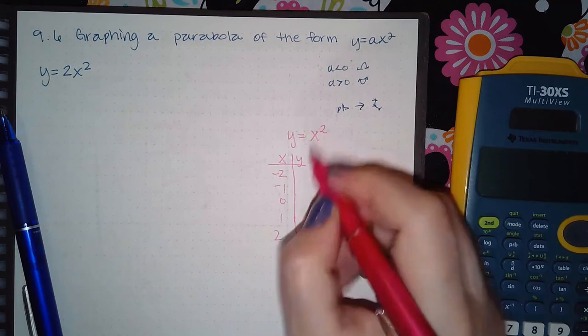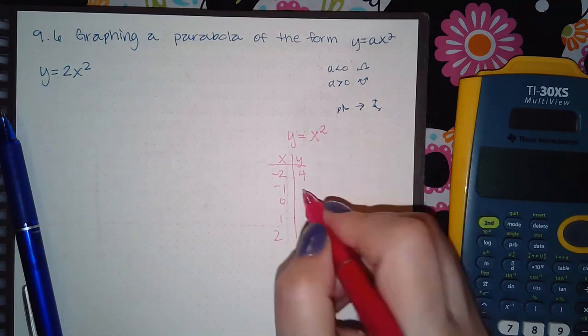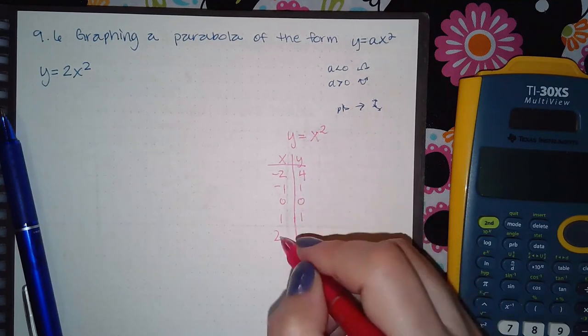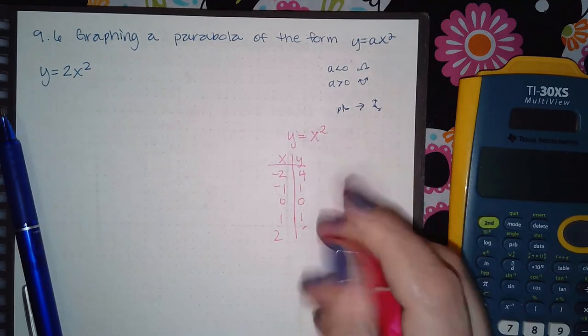when I square negative 2 I get positive 4, when I square negative 1 I get positive 1, when I square 0 I get 0, when I square 1 I get 1, and when I square 2 I get 4.